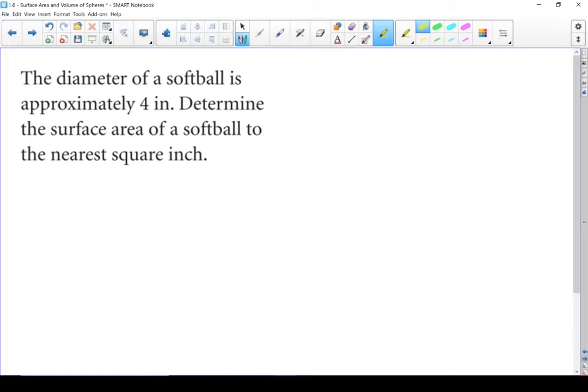Diameter of softball is approximately 4 inches. Find the surface area of a softball to the nearest square inch. So we're looking for surface area and we know that the diameter is about 4 inches. Let's write down the formula.